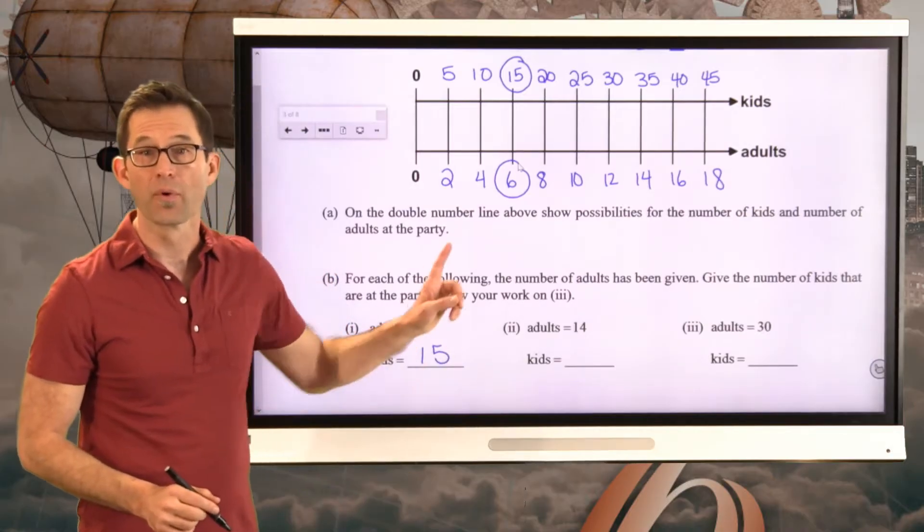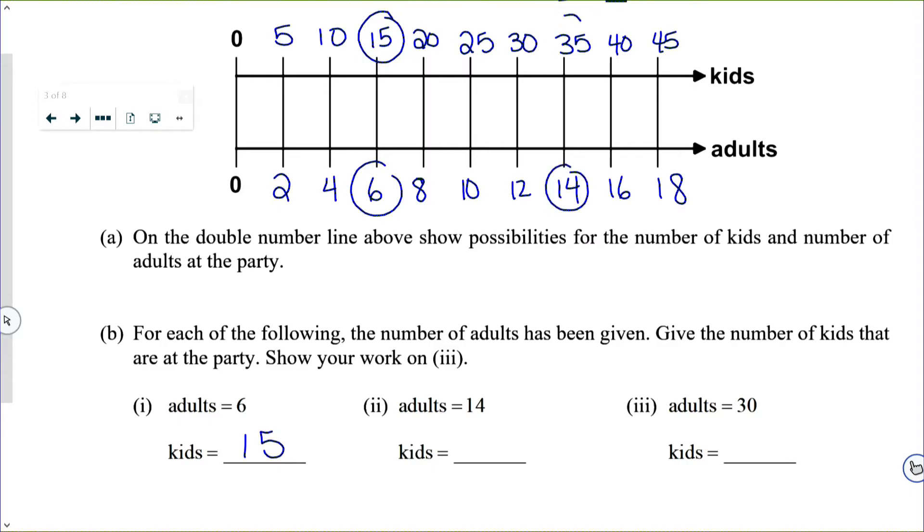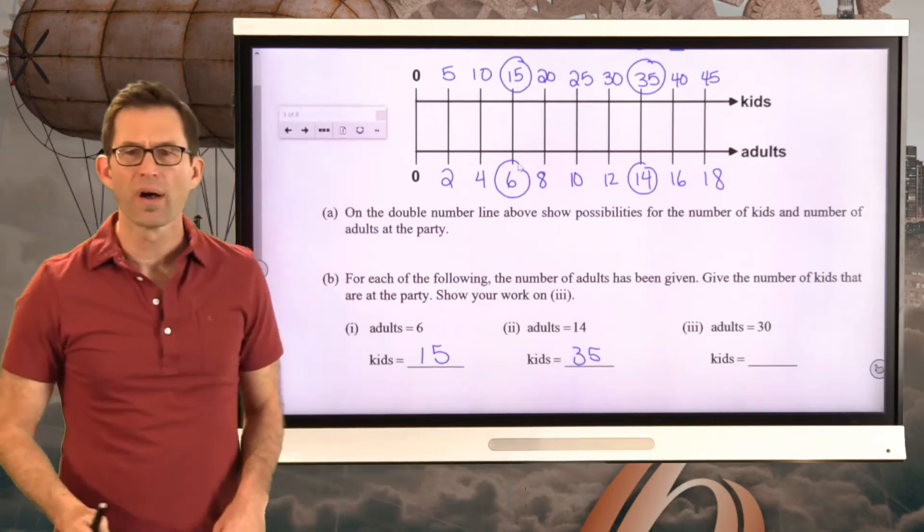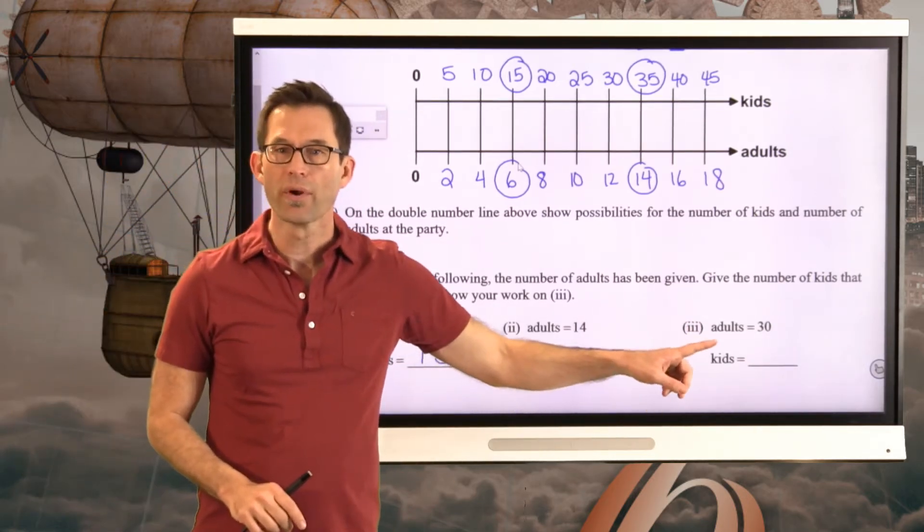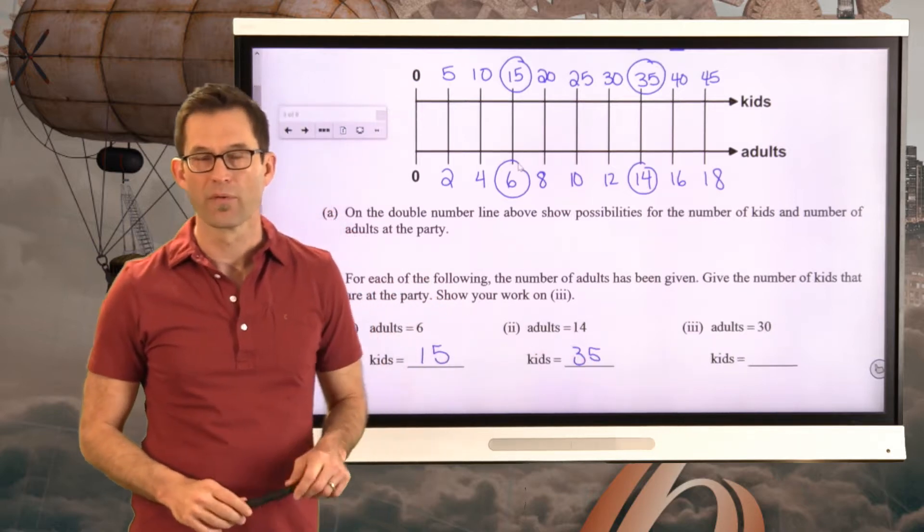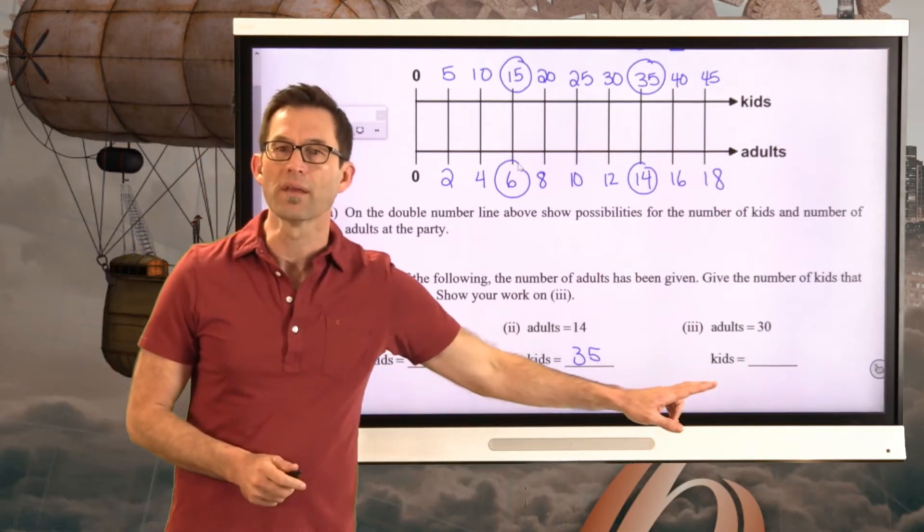Likewise, when the adult number is 14, right here, then there has to be 35 kids. But of course, this kind of process breaks down a little bit when we look at number 3, where there are 30 adults and we're trying to figure out the number of kids. So I'd like you to pause the video right now and see if you can figure out how many kids there are if there are 30 adults.